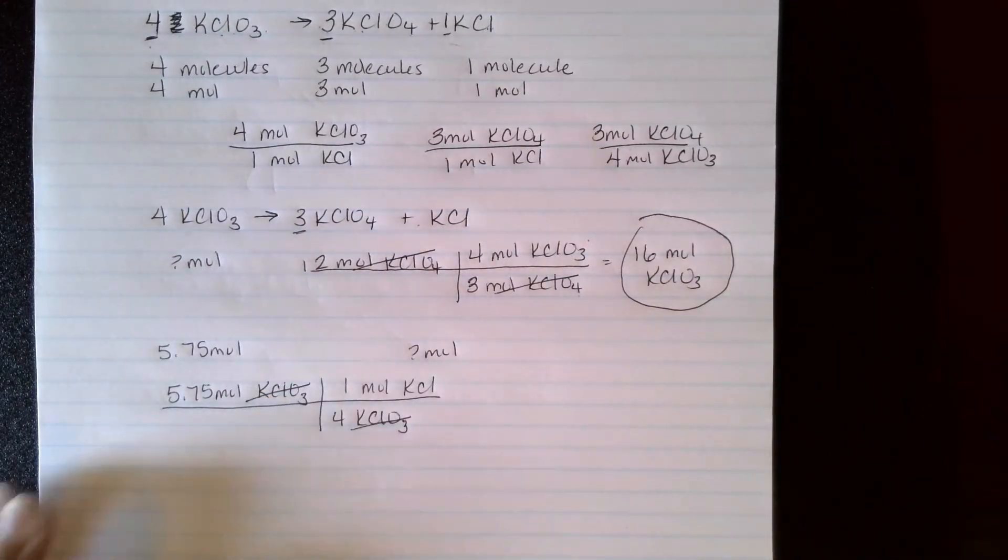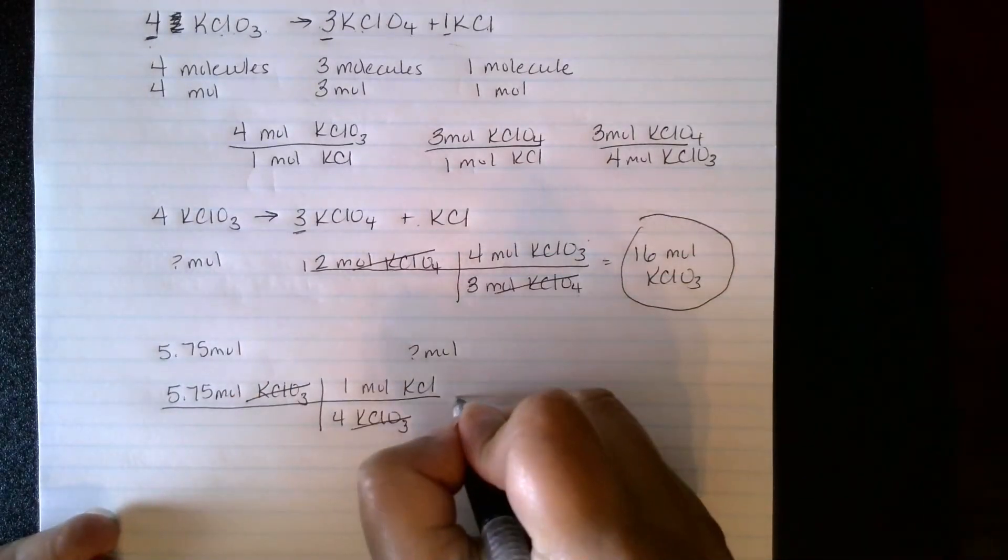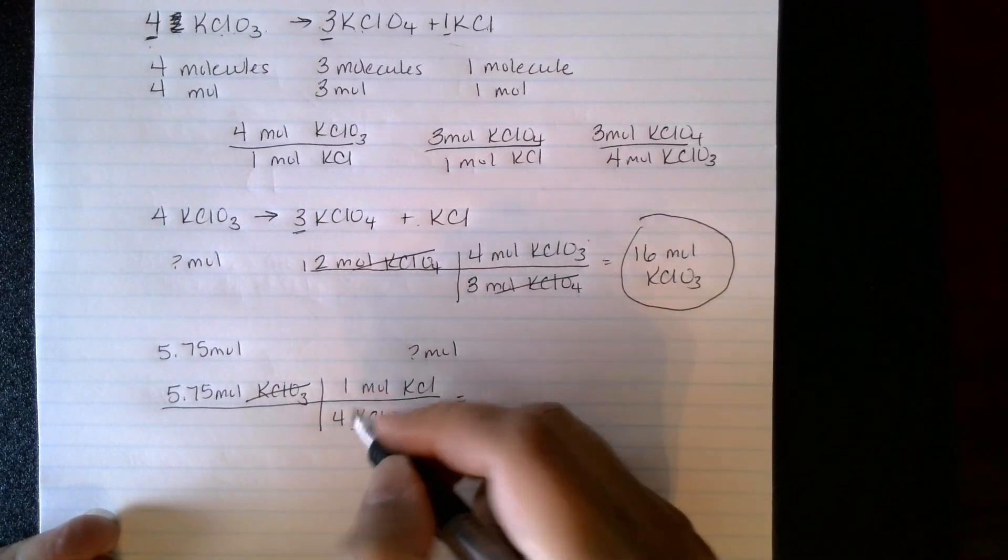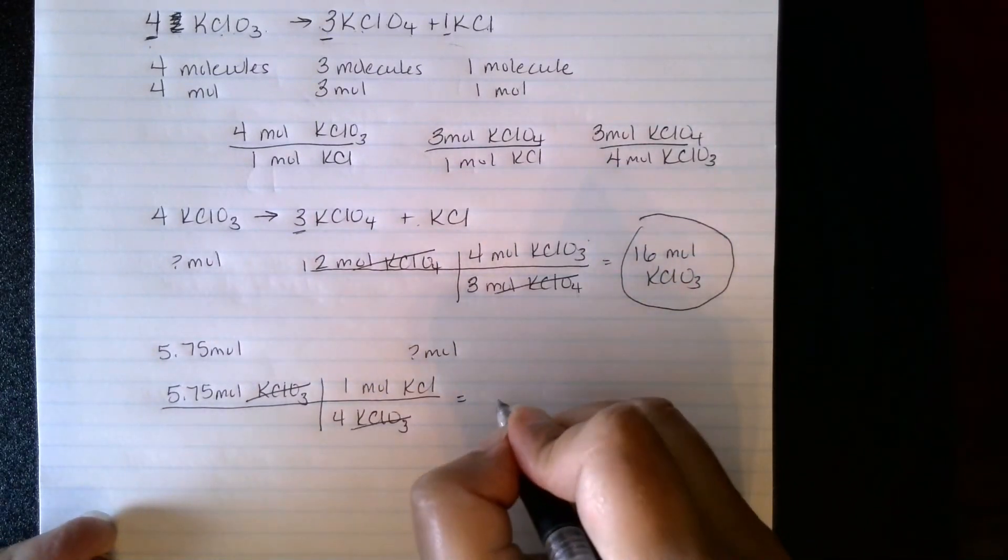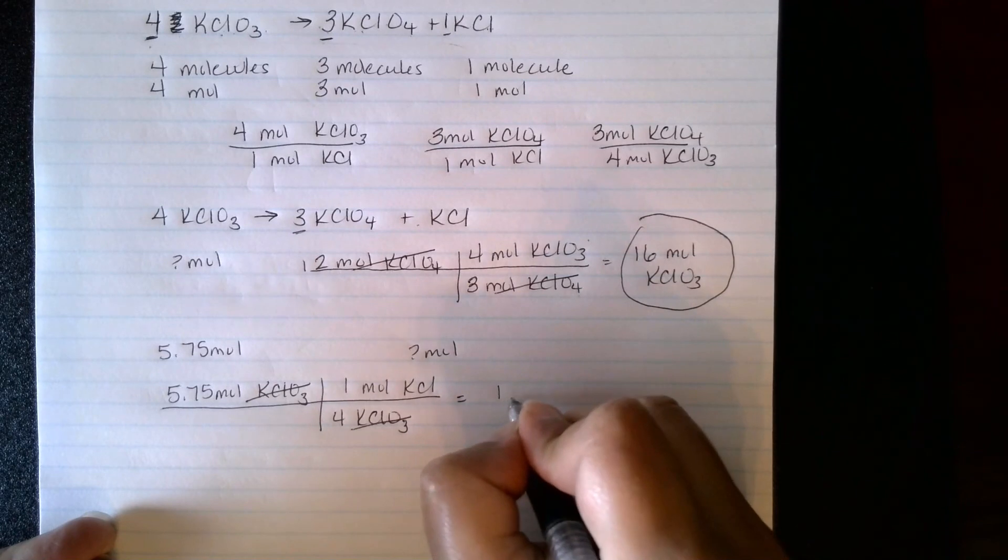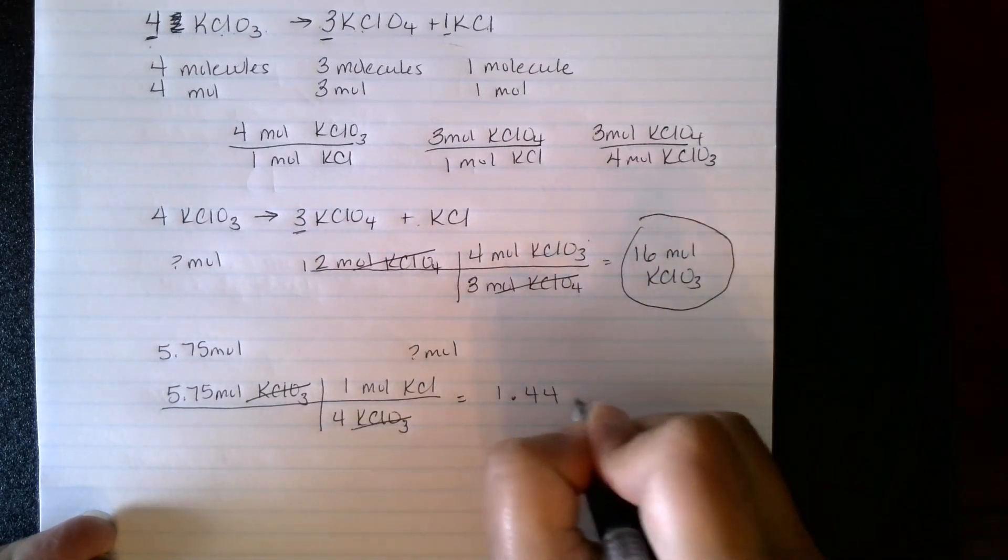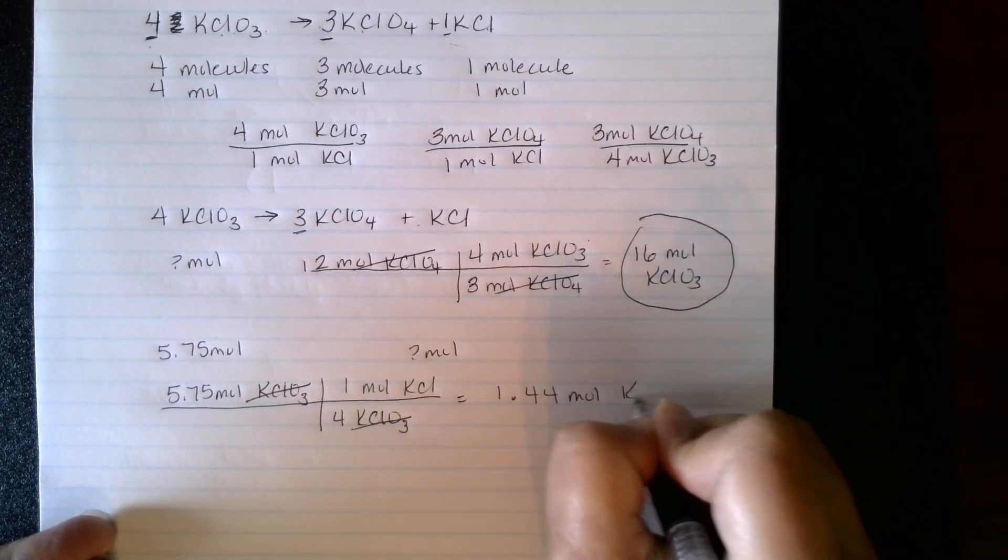So 5.75 times 1, and then divide by 4. And three significant figures, those are whole numbers, they're counting numbers. So I get 3 significant figures, 1.44 moles of KCl.